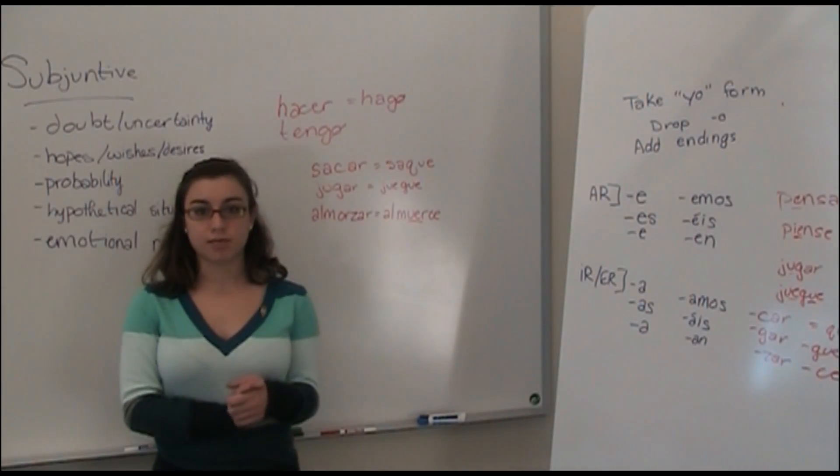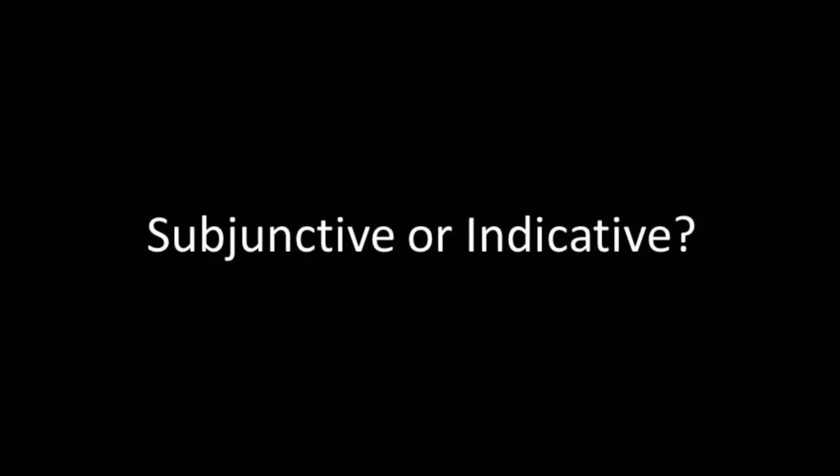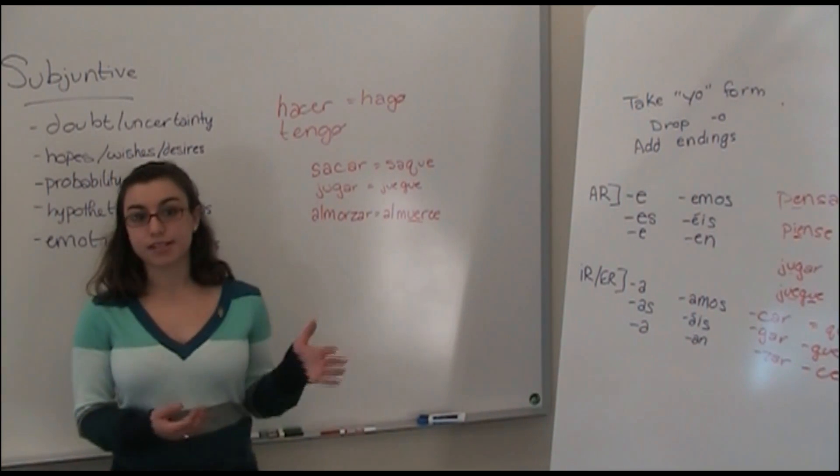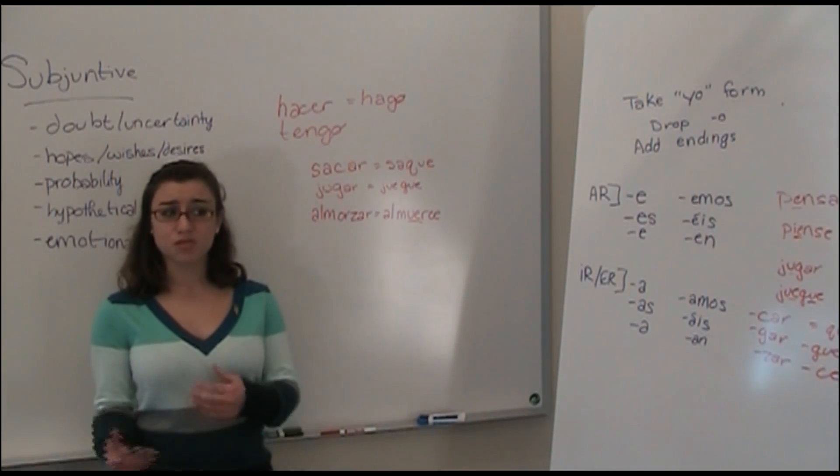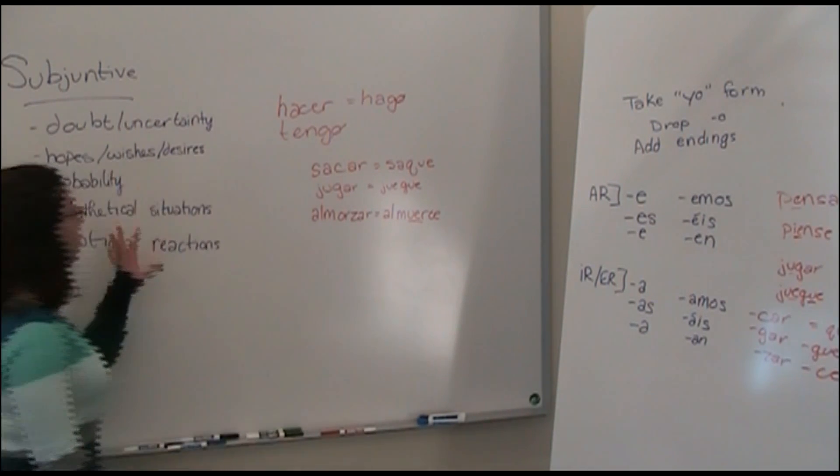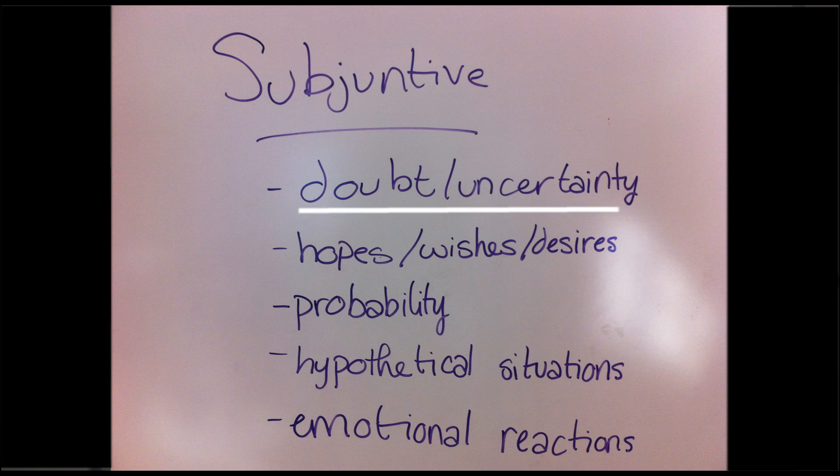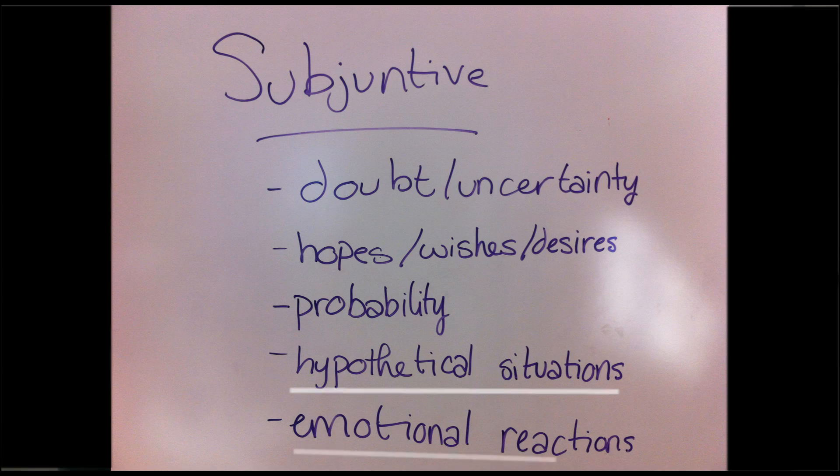Another problem that we have with the subjunctive is when do we use the subjunctive and when do we use the indicative? The indicative is another mood, and that's seen in the present tense. So when do we use the present tense normally and when do we use the subjunctive mood? With this, we just kind of look back at our list here. Is it an expression of doubt, uncertainty? Is it a hope, wish, or desire? Is it a probability? Is it a hypothetical? And is it an emotional reaction?